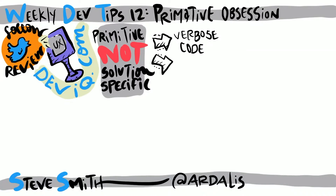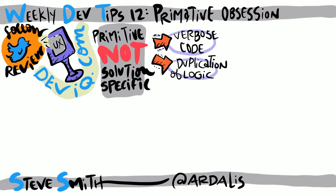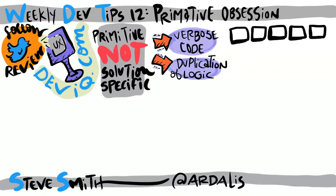Primitives refer to built-in types, like bool, int, string, etc. The primitive obsession code smell refers to overuse of primitive types to represent concepts that aren't a perfect fit, because the primitive supports values that don't make sense for the element they're representing.